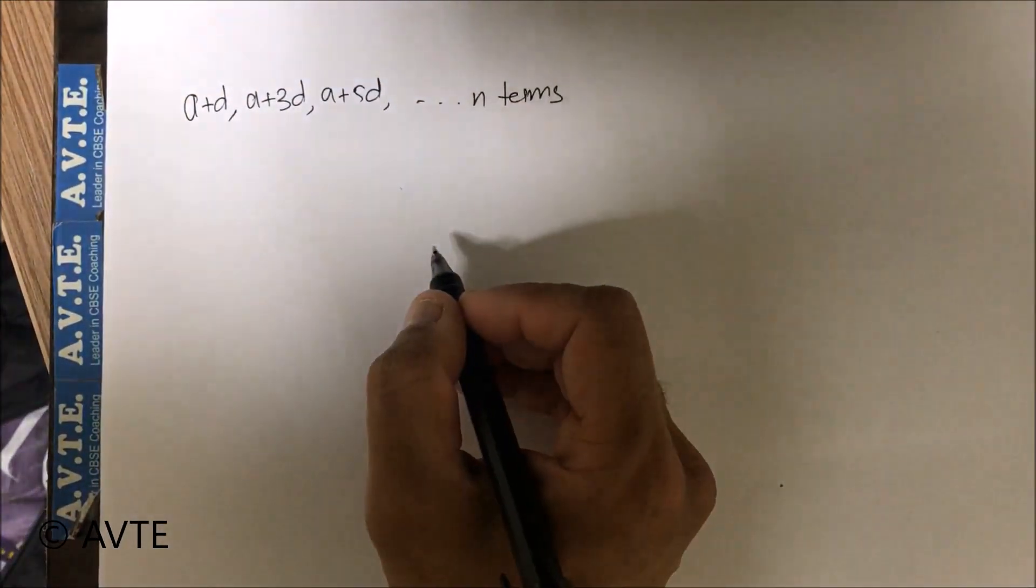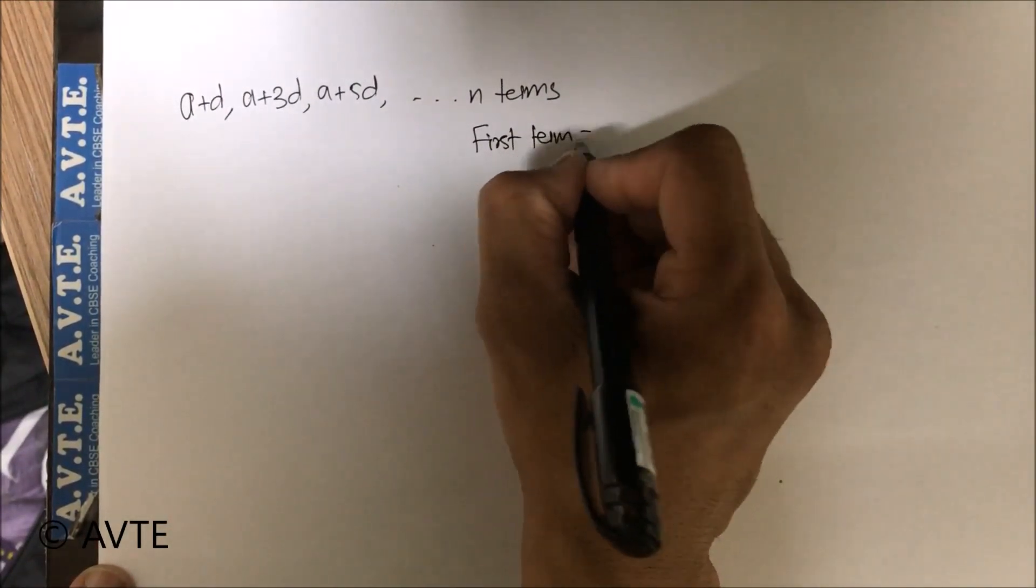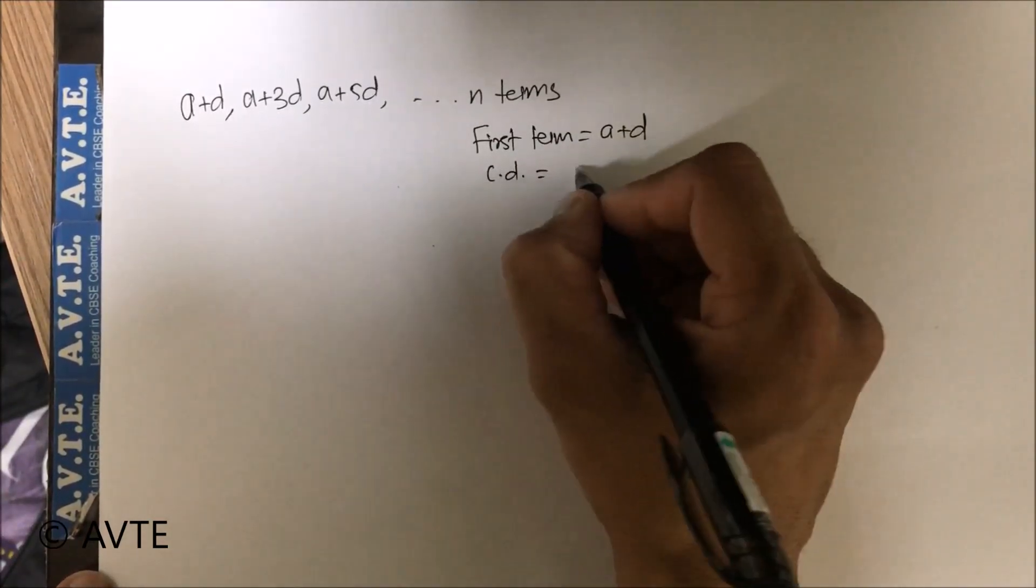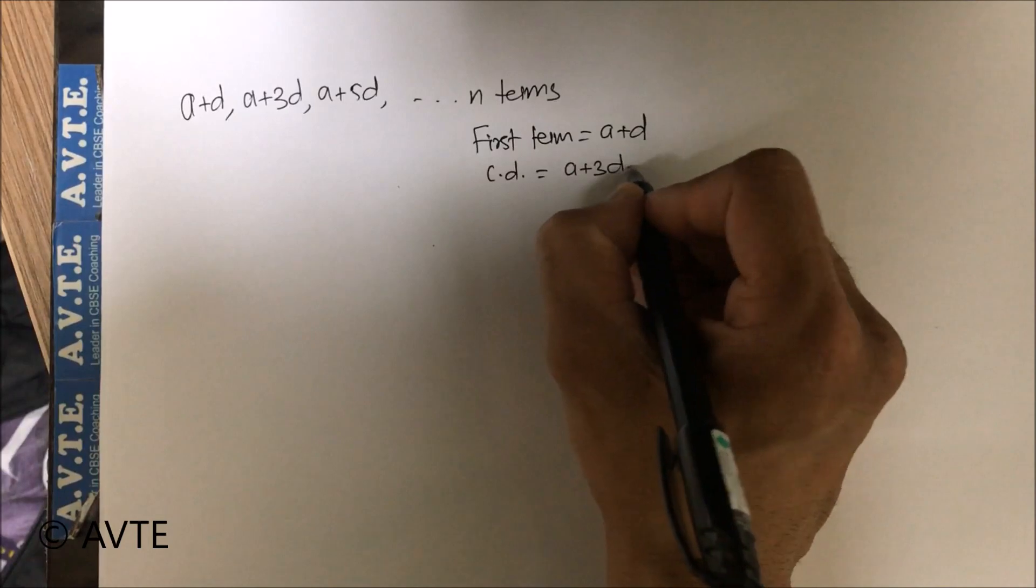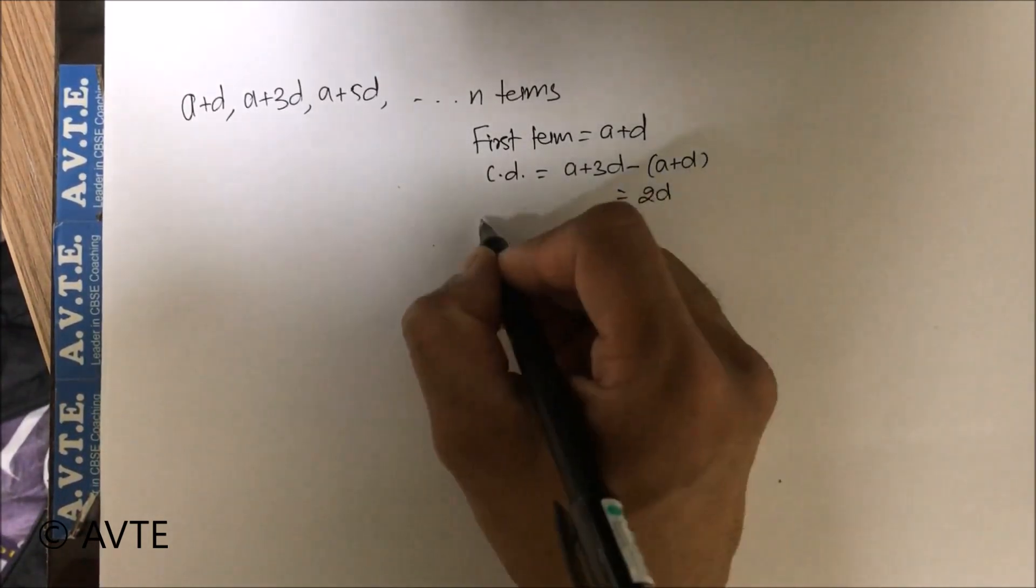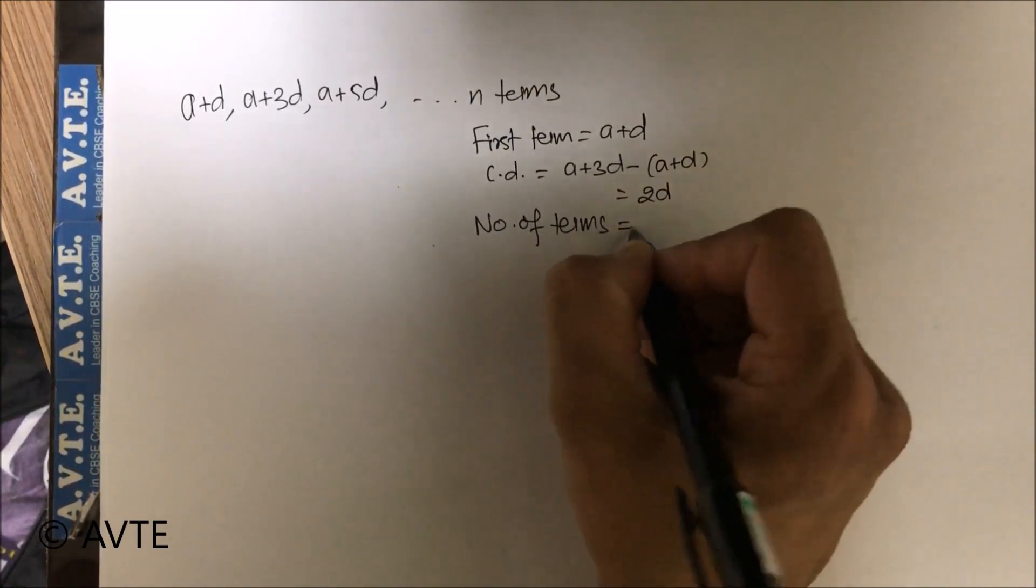So here the first term is a plus d, which is very important. Common difference is second term minus the first term, which is 2d, and number of terms is n.